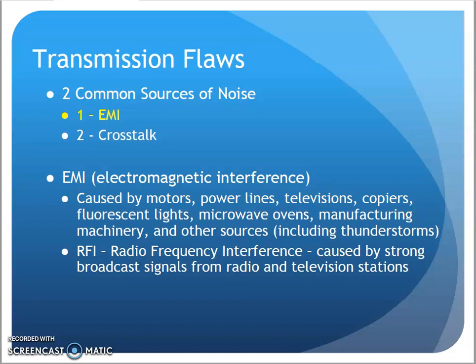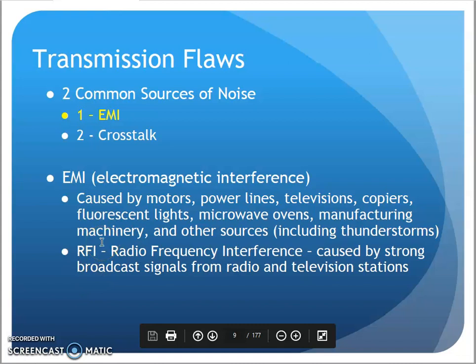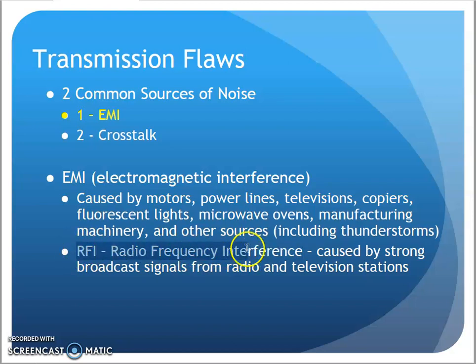A smaller subset is radio frequency interference — interference from strong radio signals. If you've ever driven near a radio station, sometimes that signal is strong enough that it bleeds over to neighboring channels. In a communication context, a long data cable can act like an antenna and actually pick up radio frequencies. That would be a form of radio frequency interference.